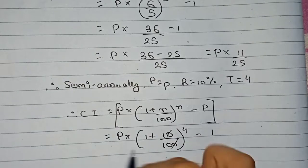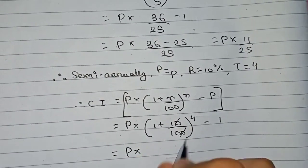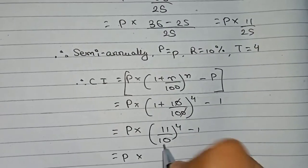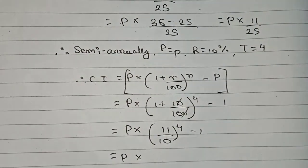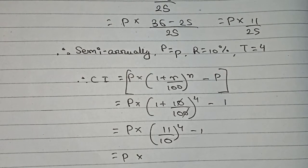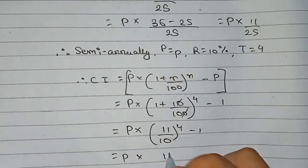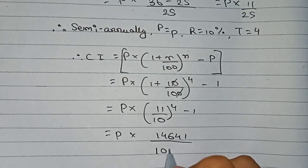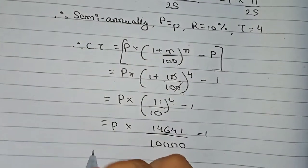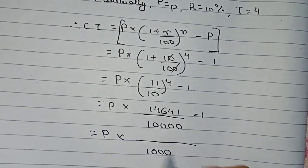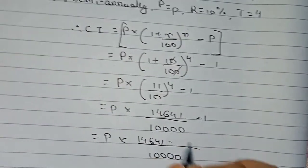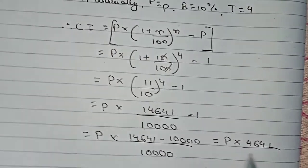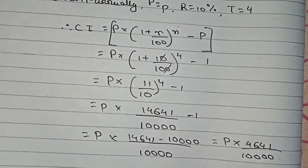So it becomes P into [(11/10)⁴ − 1]. Now 11⁴: 11 × 11 = 121, 121 × 11 = 1331, 1331 × 11 = 14641. And 10⁴ = 10,000. Therefore the semi-annual CI equals P into (14641/10000 − 1) = P into (14641 − 10000)/10000 = P × 4641/10000.